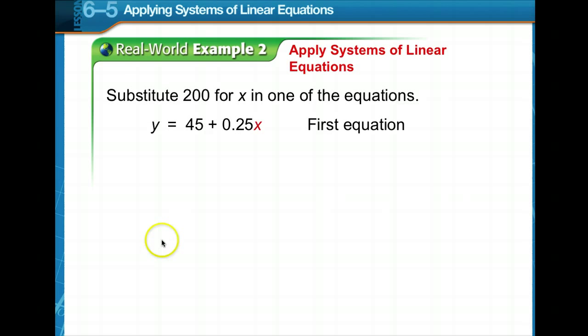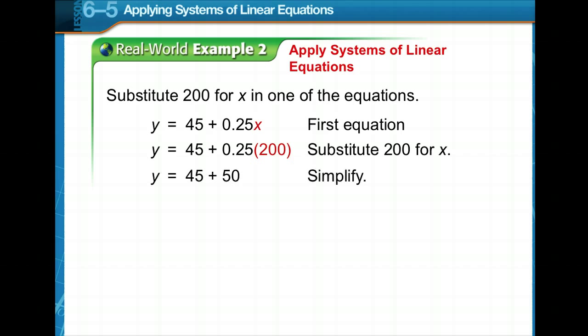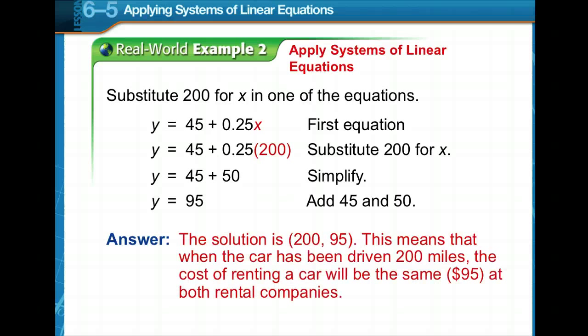So now we're going to substitute 200 in for x. It doesn't matter which equation. Here they're picking the first equation. 45 plus 50, y is equal to 95. So the solution is 2, 95. This means that when the car has been driven 200 miles, the cost of renting a car will be the same, $95 at both rental companies.